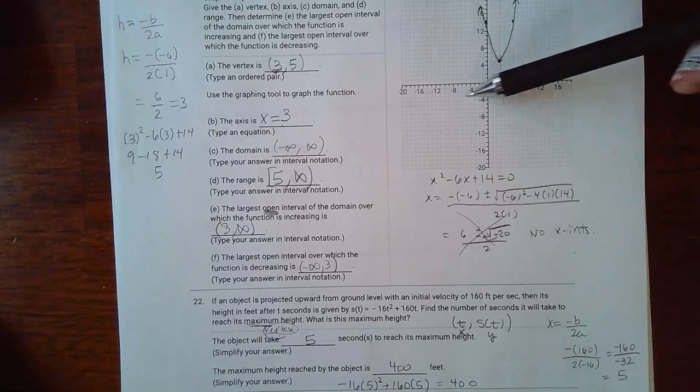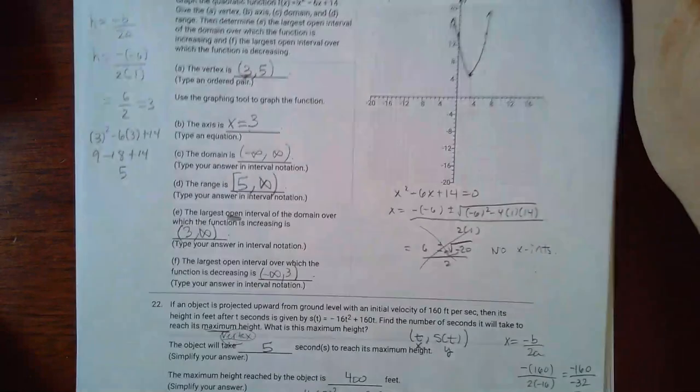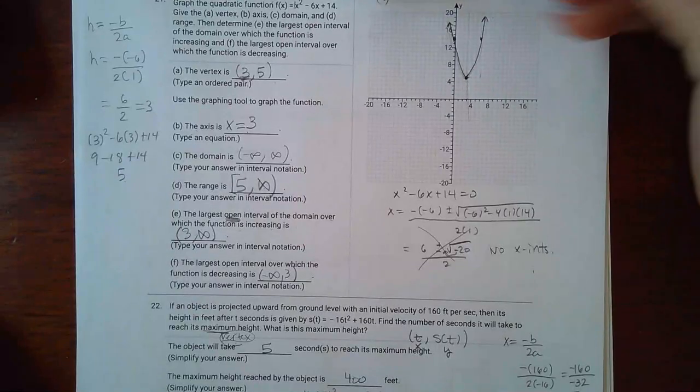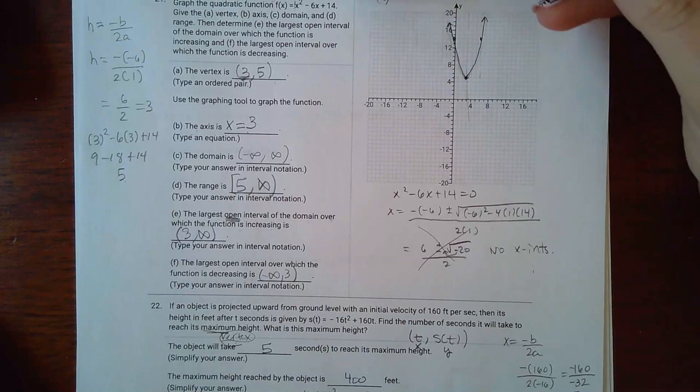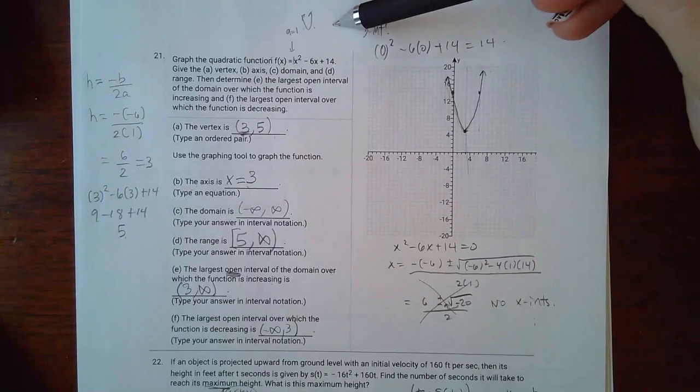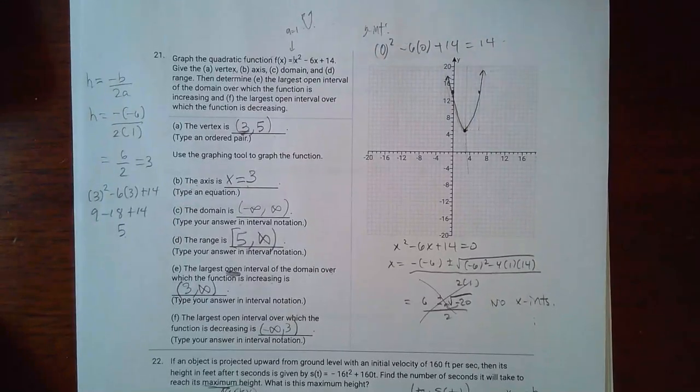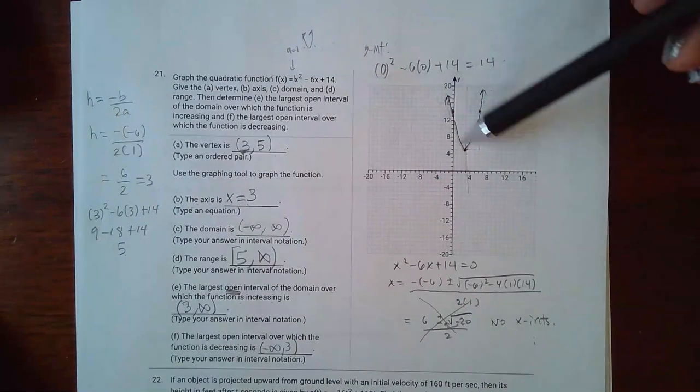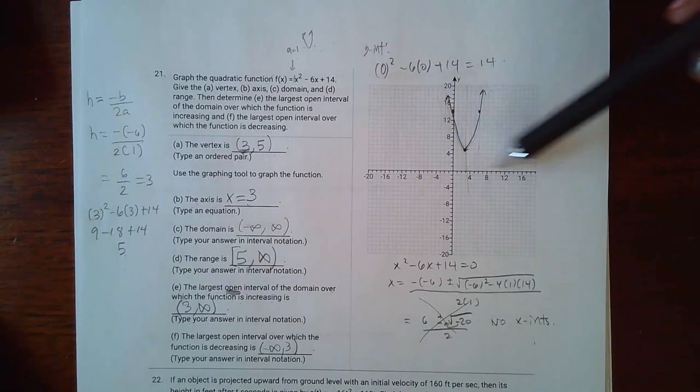Now again I knew that there wouldn't be any x-intercepts because the vertex was here and it was opening upward. So since the vertex was here and it was opening upward, that meant it was going to go this way, so I wouldn't have any x-intercepts.